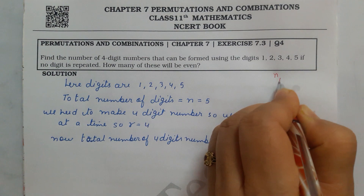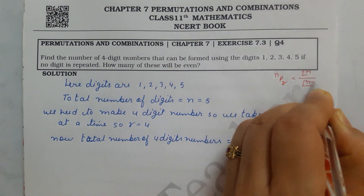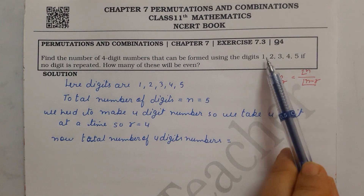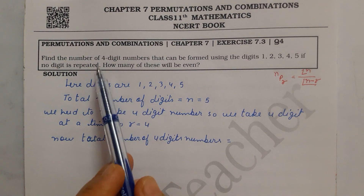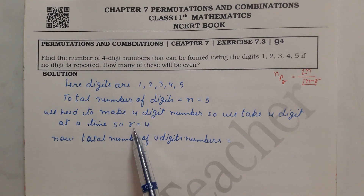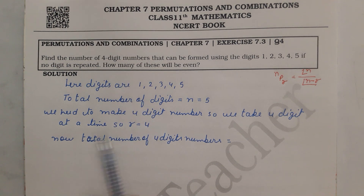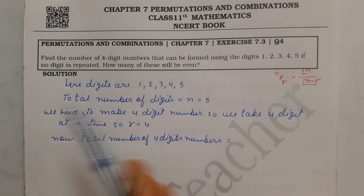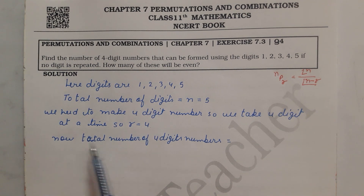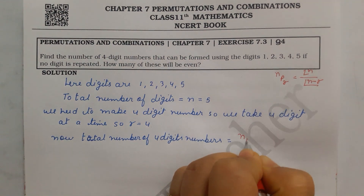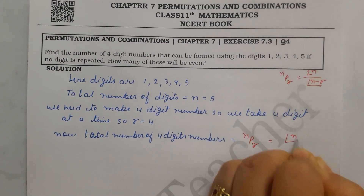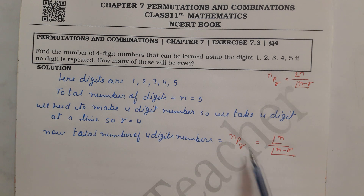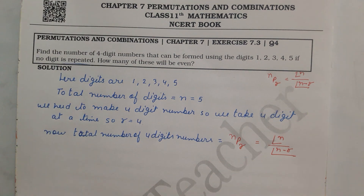The formula we will use is nPr. The nPr formula is: factorial n divided by factorial (n minus r). Here, n is the total number of objects given — we have 5 digits so n equals 5. We have to make a 4-digit number so r equals 4. This formula applies when all objects are different and no repetition is allowed.